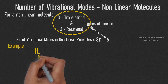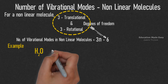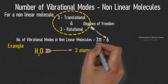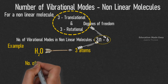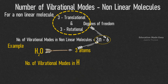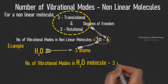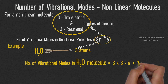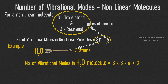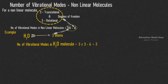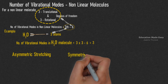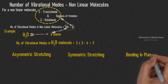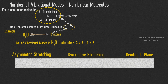For example, consider the molecule H2O. The H2O molecule has three atoms, therefore N is equal to 3. Substituting this in the equation 3N − 6, the number of vibrational modes in the H2O molecule becomes equal to 3 × 3 − 6, which is equal to 3. This means there are three vibrational modes for the H2O molecule: asymmetric stretching, symmetric stretching, and bending in plane. The pictorial representation of these three modes of vibration are shown for better understanding.